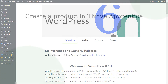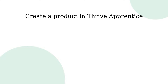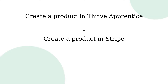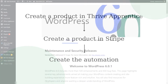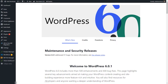Briefly, the steps to be taken here are: first, create a Thrive Apprentice product that contains the course we're trying to sell — the premium course. Then we create the product in Stripe and customize it there. Next, we'll create an automation in Thrive Automator that receives the user data once someone purchases the course, and with that data the automation will create a new user or update an existing one and give them access to our Thrive Apprentice product. Now let's go ahead and start the flow.